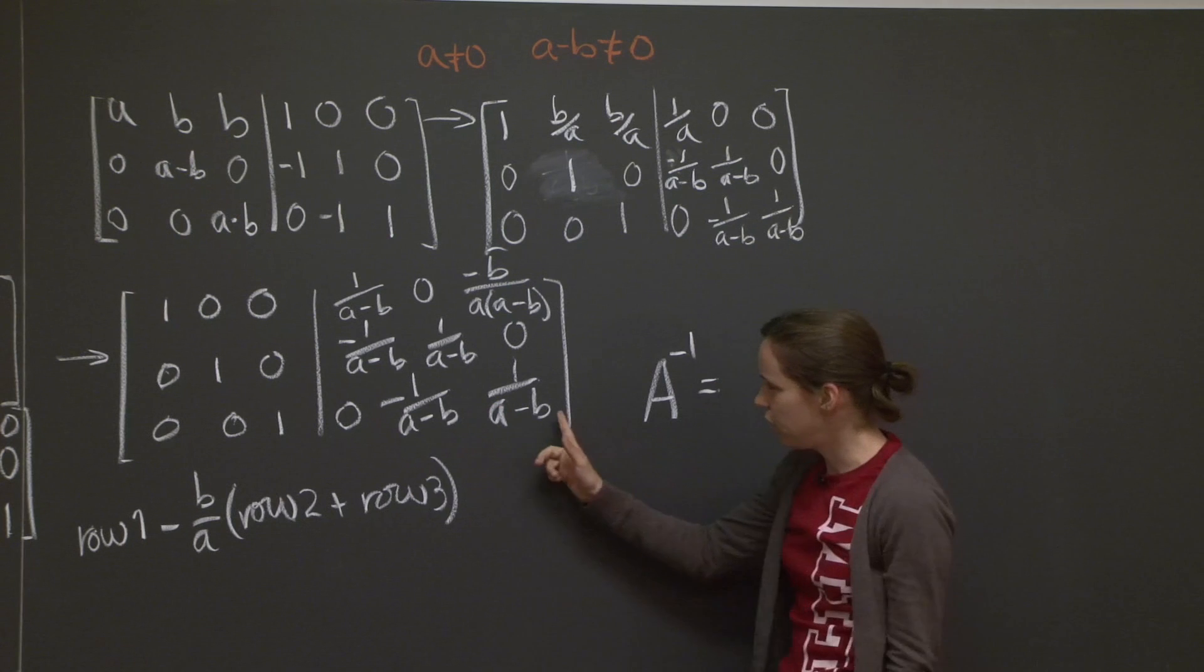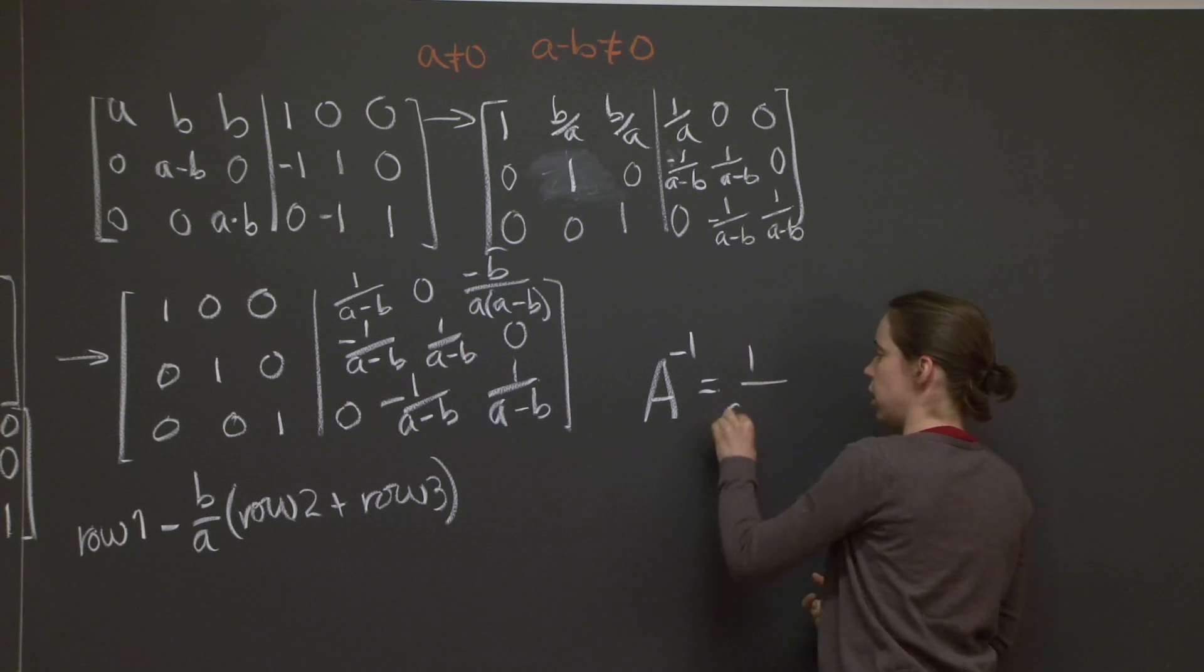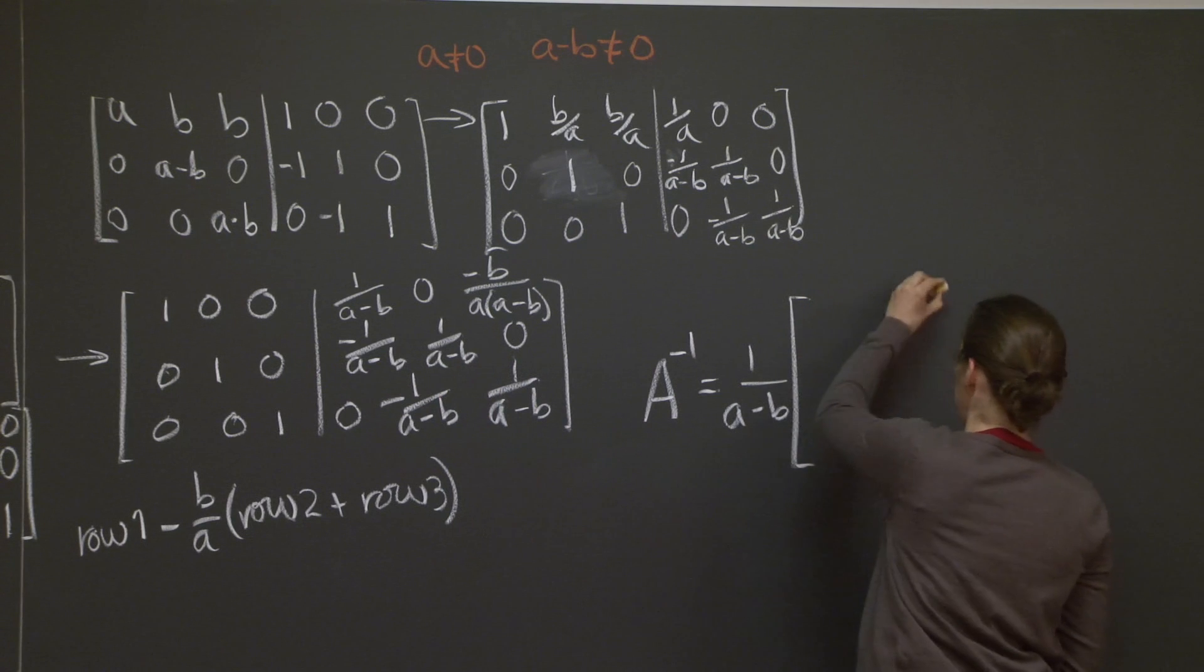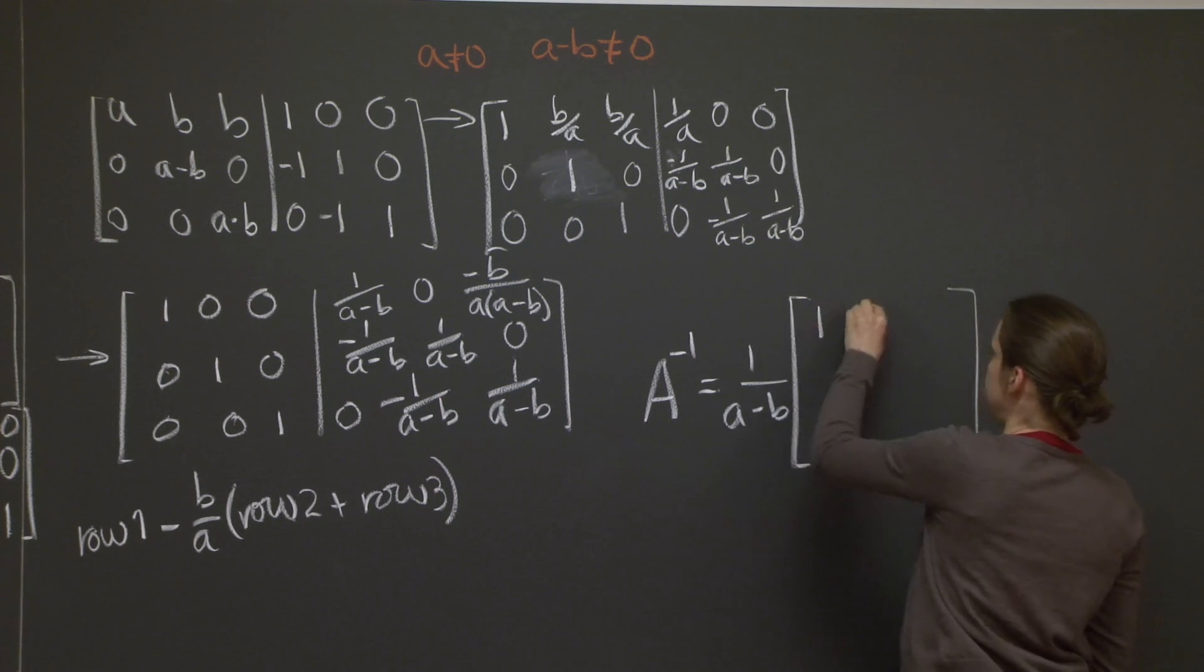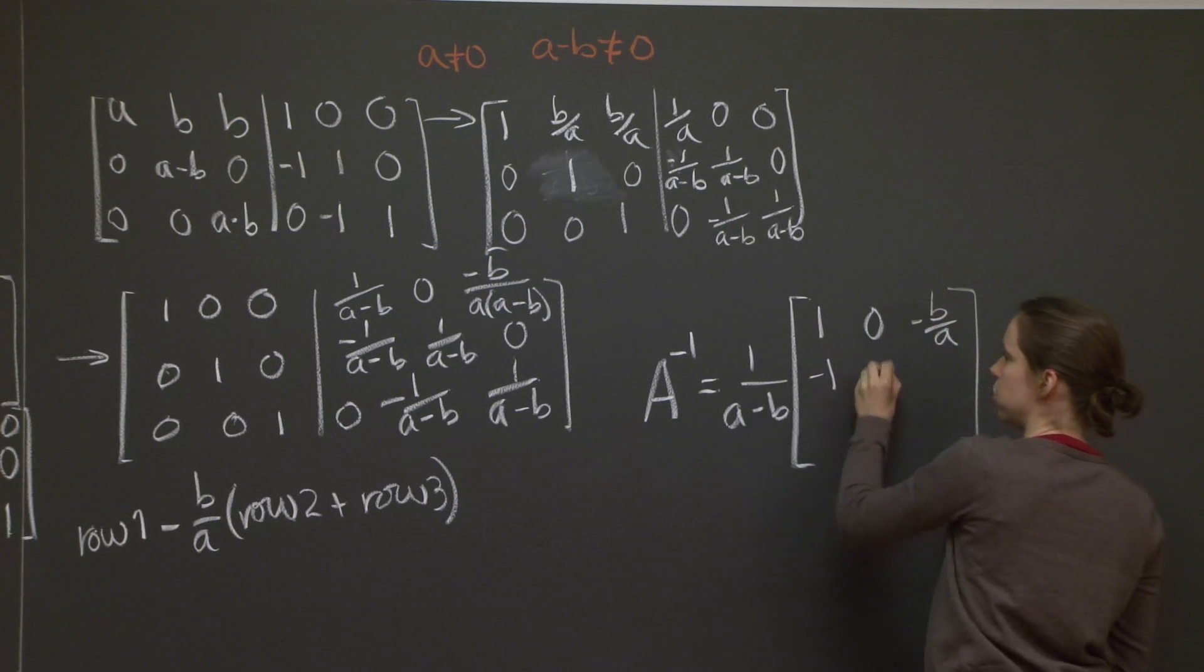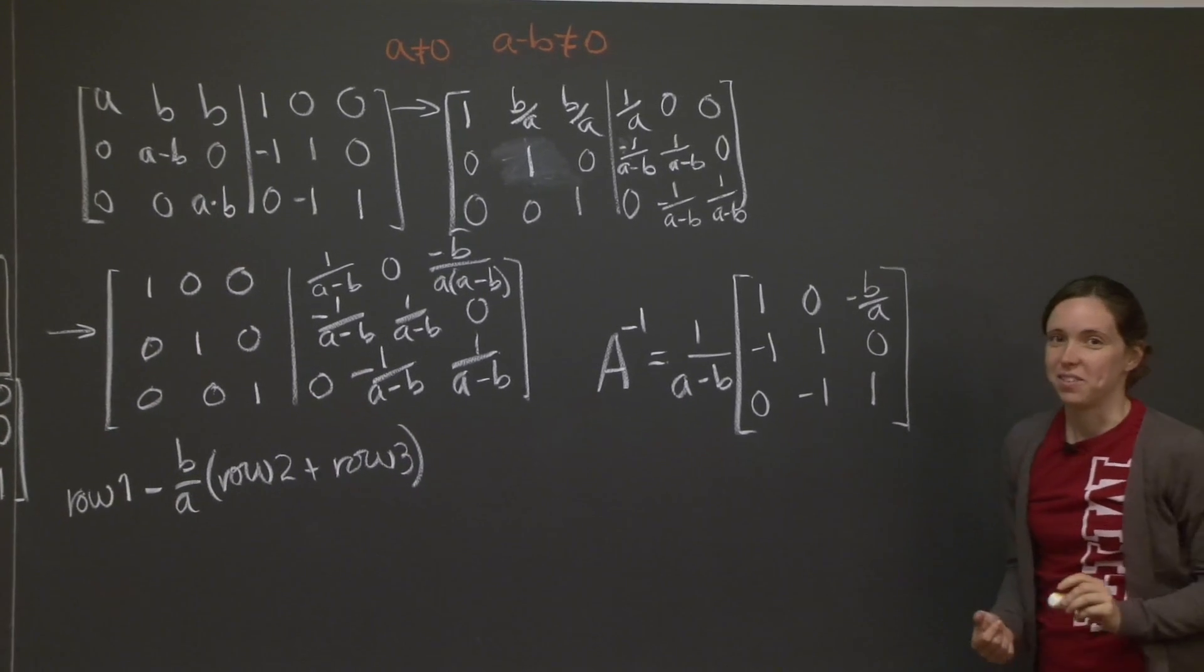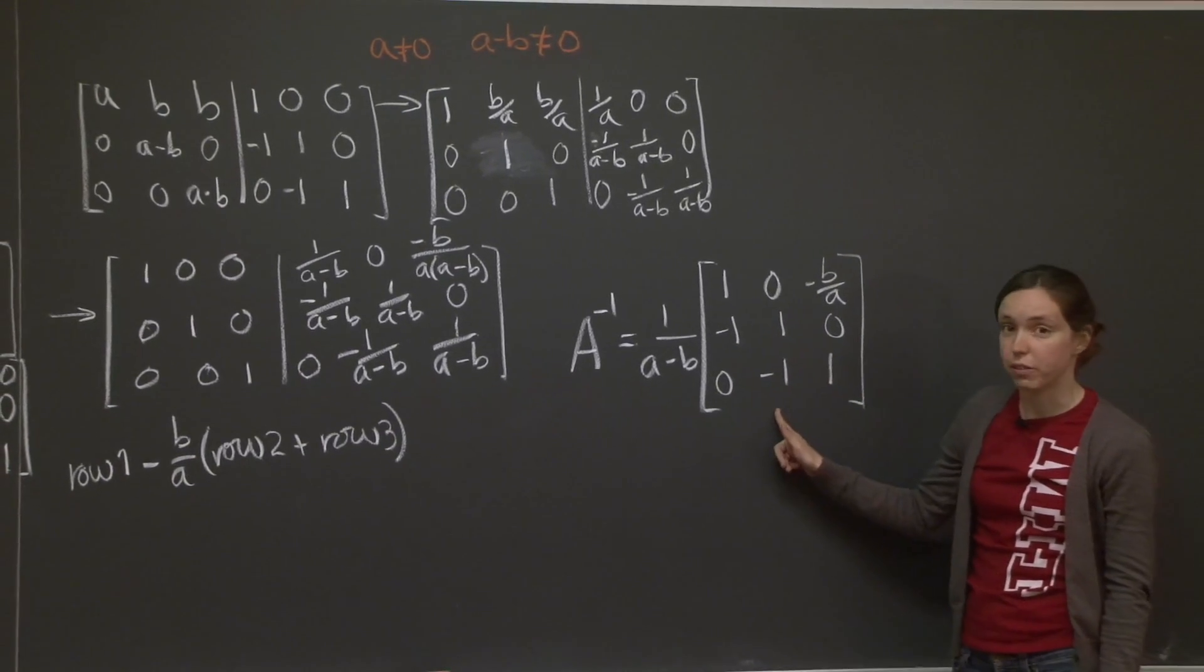A inverse equals, you're dividing everything by a minus b, so pull out that factor. 1, 0, minus b over a, minus 1, 1, 0, 0, minus 1, 1. It looks much better now. So here's your A inverse.